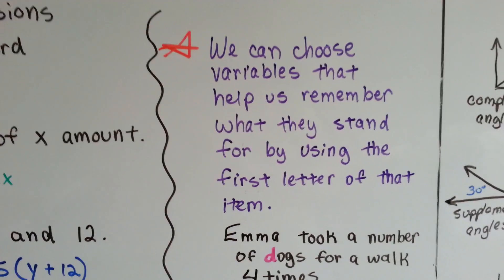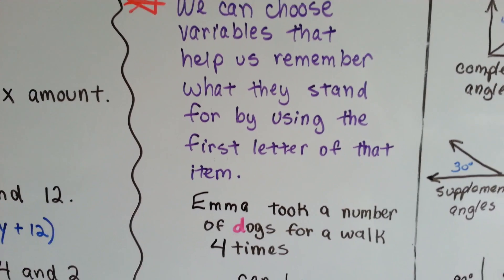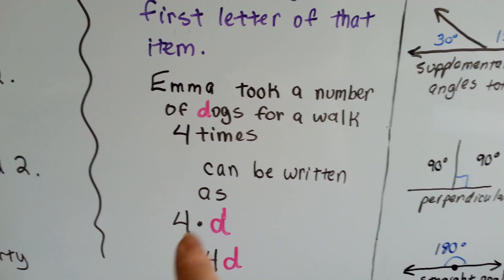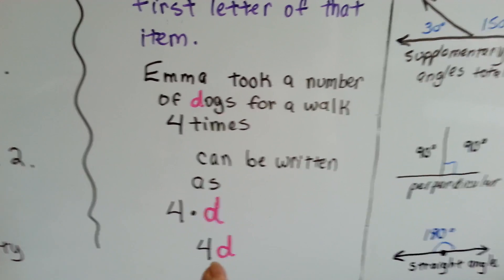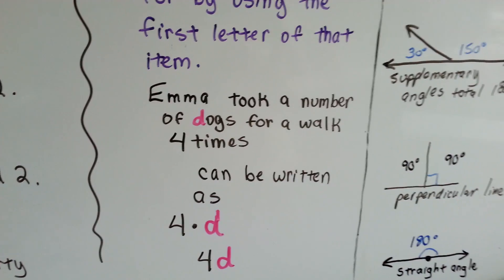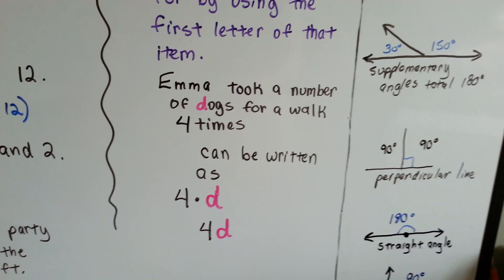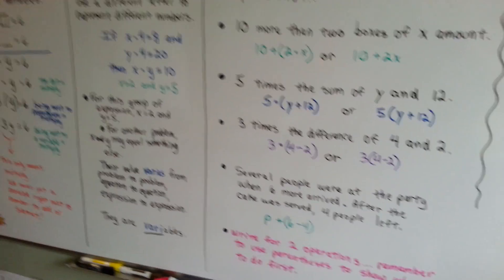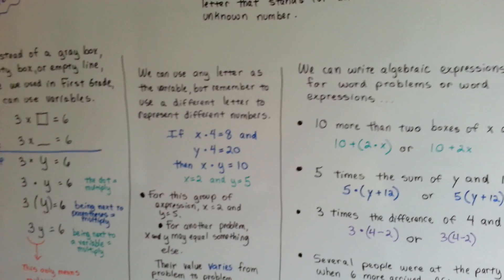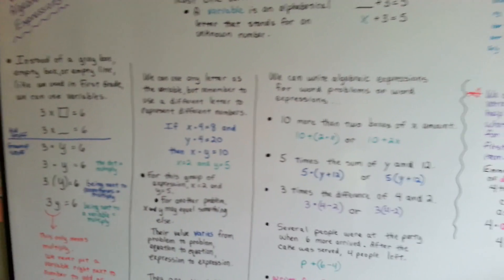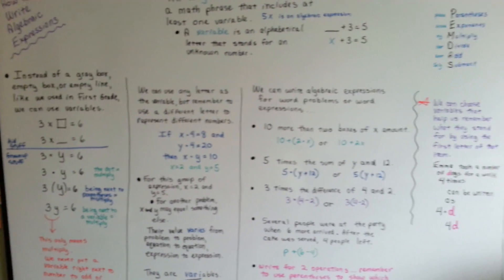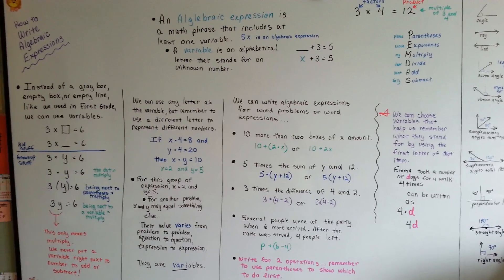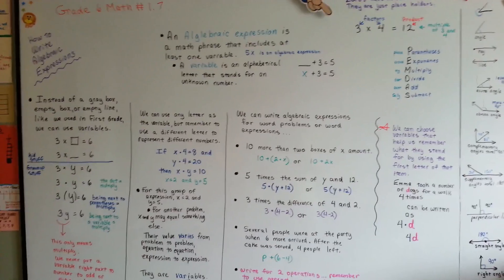So we can choose variables that help us remember what they stand for by using the first letter of that item. Emma took a number of dogs for a walk 4 times. It can be written as 4 times d with the dot or 4 next to the d. And we use d for dogs. That way we know that when we're multiplying, we're multiplying the amount of the dogs. Just like I did here with the p for the people. So you can use a variable that has the first letter of something so that, especially if you're doing several, then you can keep track of what it was you were multiplying because your variable stands for that item. Isn't that ingenious of them to think of doing that?